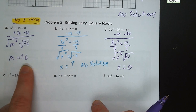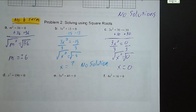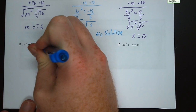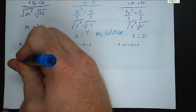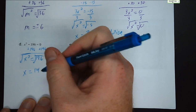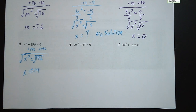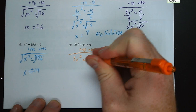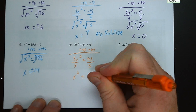Try letters D, E, and F on your own. Letter D: add 196 to both sides, so x squared equals 196. Take the square root of both sides: x equals plus or minus 14. This is a good time to point out that you'll have a pop quiz at some point in the next week on perfect squares from 1 through 15 — have them memorized. For letter E: add 45 to both sides, giving 5x squared equals 45. Divide by 5: x squared equals 9. Take the square root: x equals plus or minus 3.